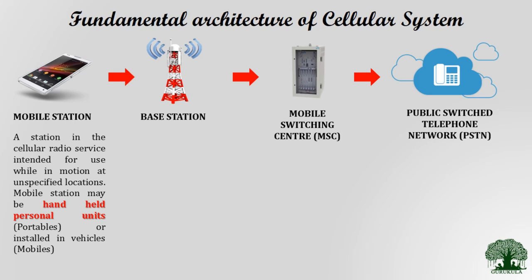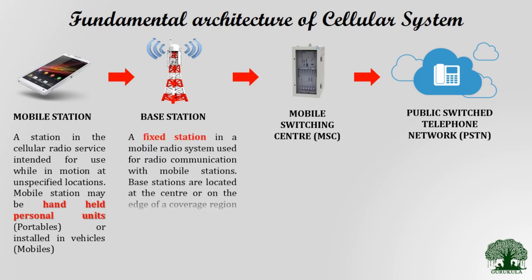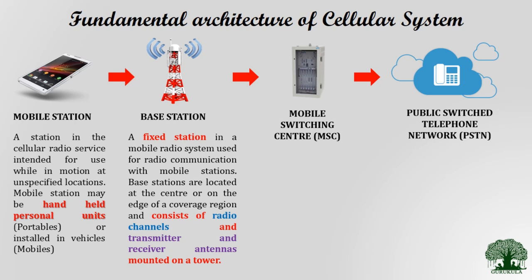Signals generated from the mobile station are forwarded to the base station. Base stations are fixed stations which you can see on the ground, mounted on towers. They are responsible for receiving signals from the mobile station. These fixed stations contain radio channels — the total available channels are allocated at the base station — along with transmitters and receivers mounted on overhead towers to increase antenna height.